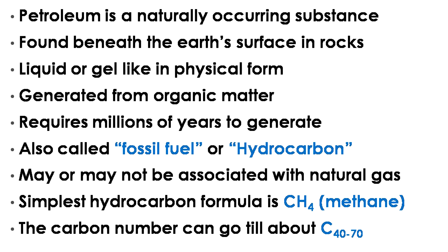Why hydrocarbon? Because petroleum is made up of hydrogen and carbon atoms. The basic formula of petroleum is CH4, which is called methane and it is found in gas form. The oil that we find underground can have different kinds of hydrocarbons — some are short chain where the carbon number varies from C20 to C30, some may be very long chain where it varies from C40 to C70. Depending on what kind of carbon chain you have, the physical form of petroleum is derived.